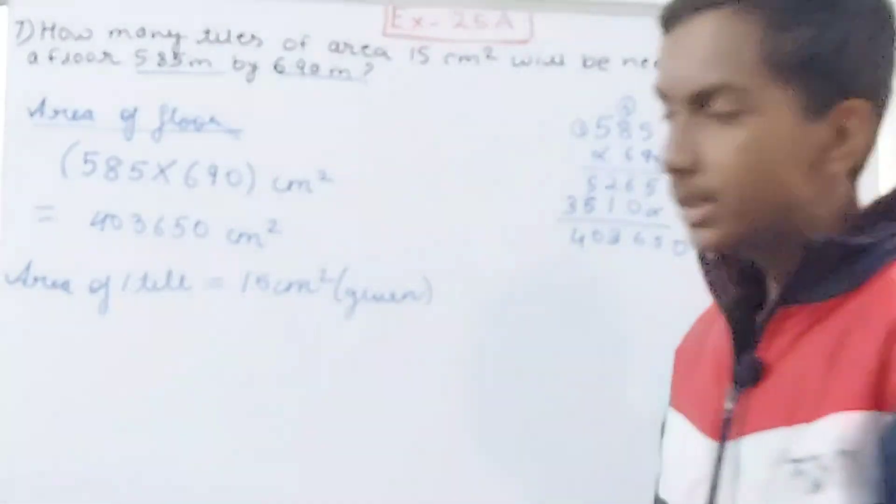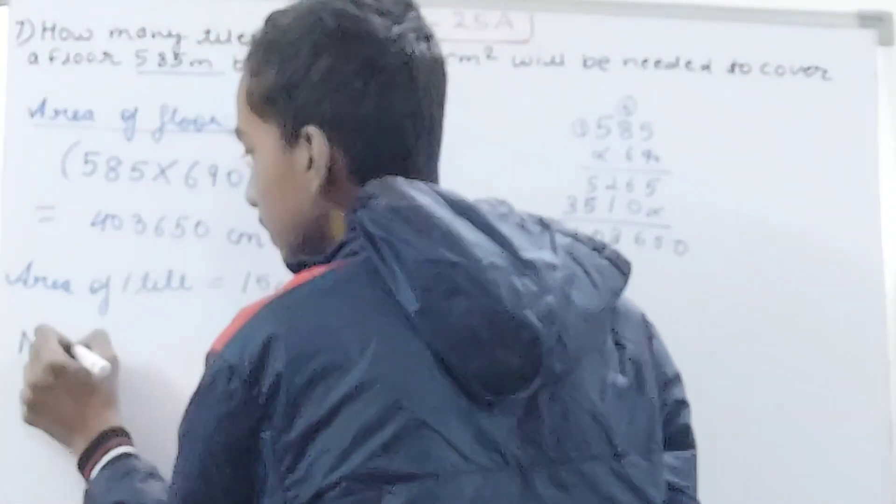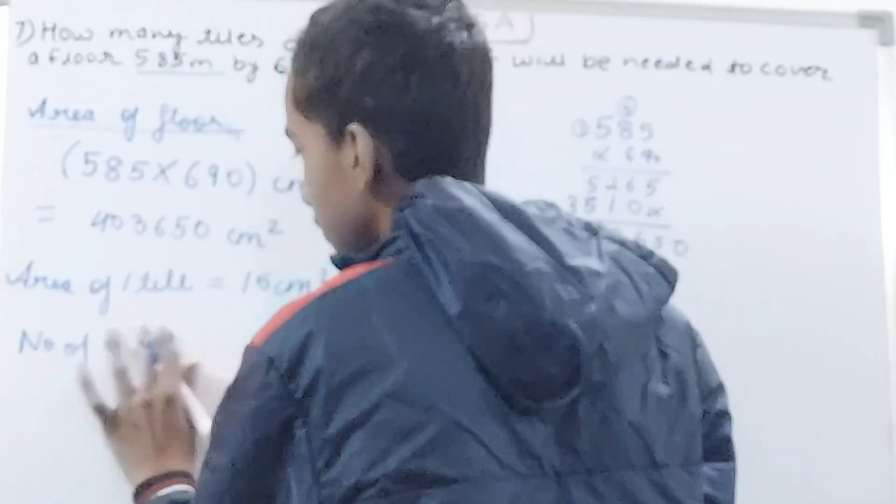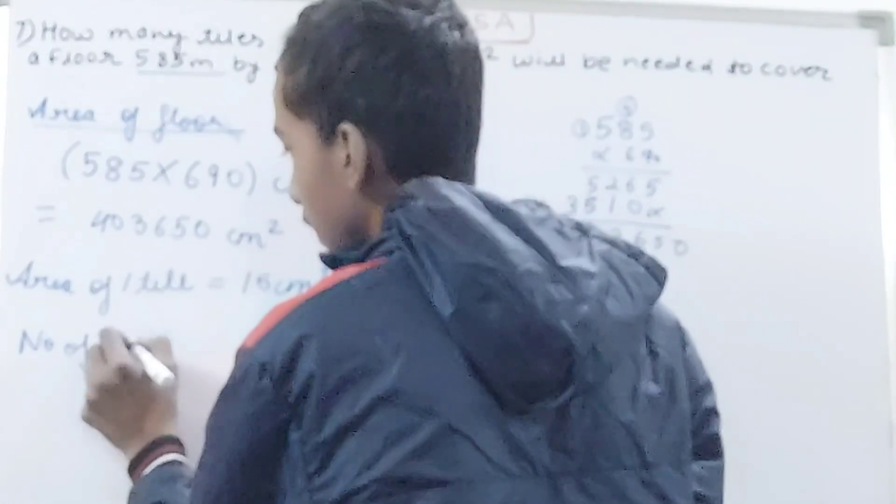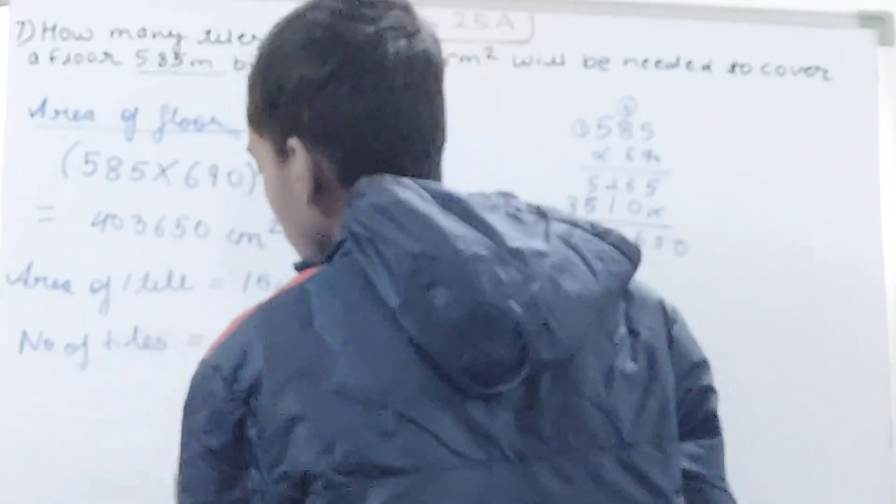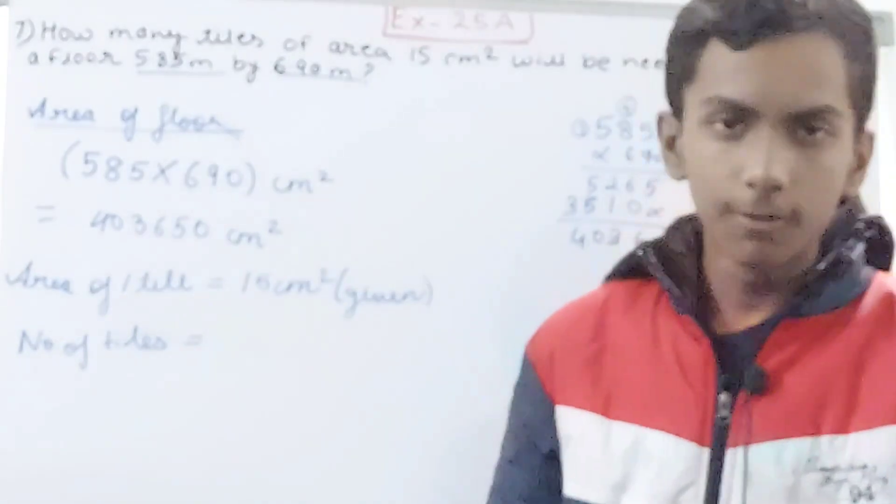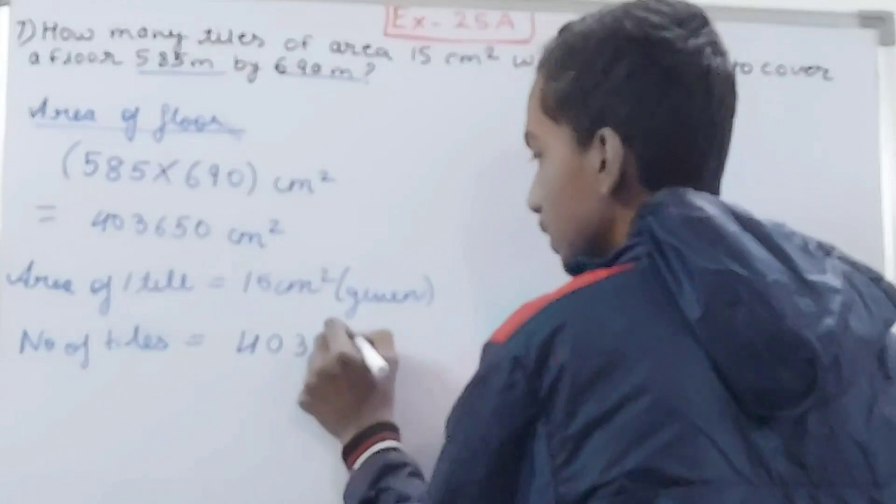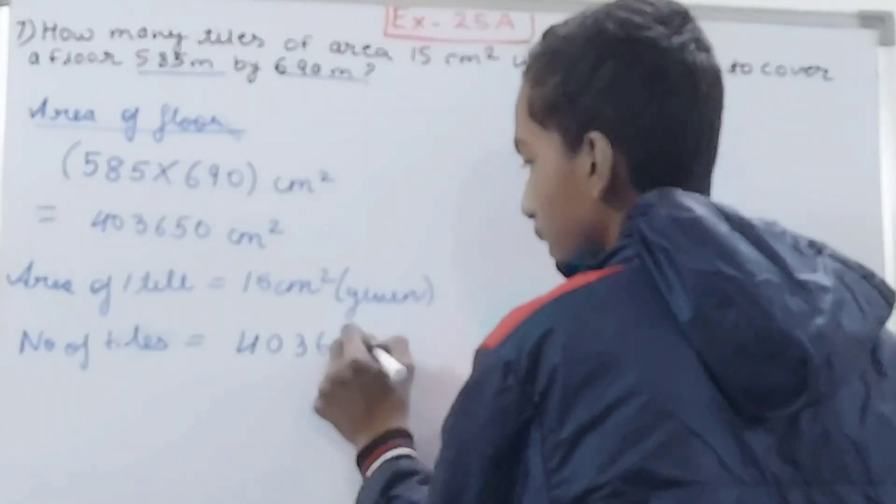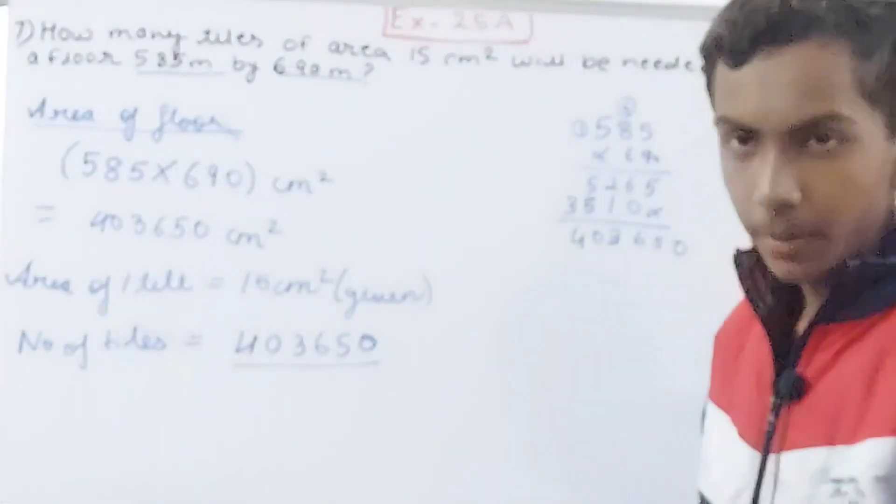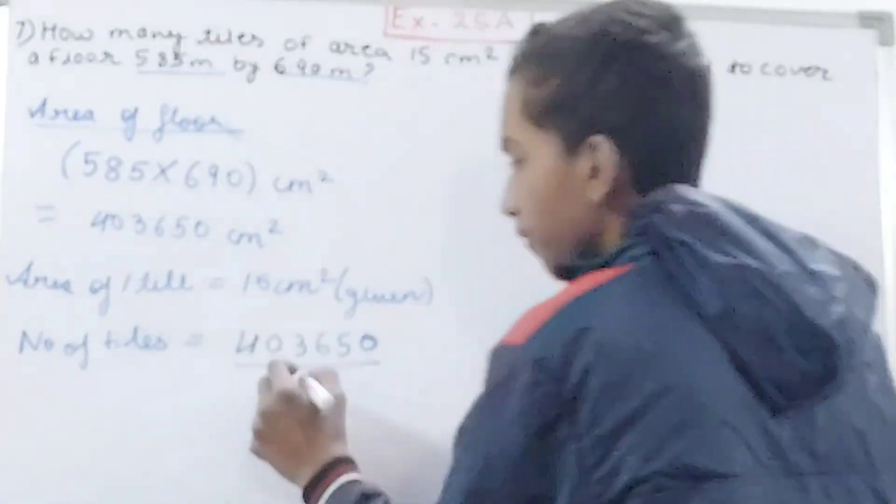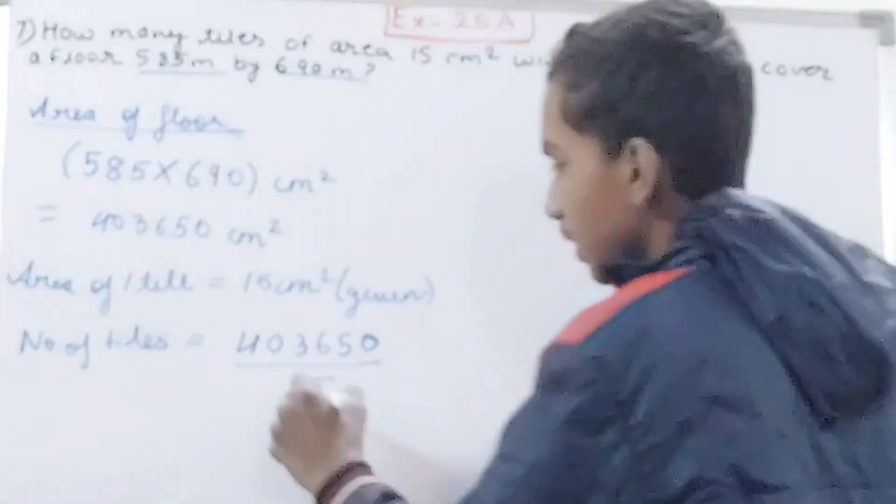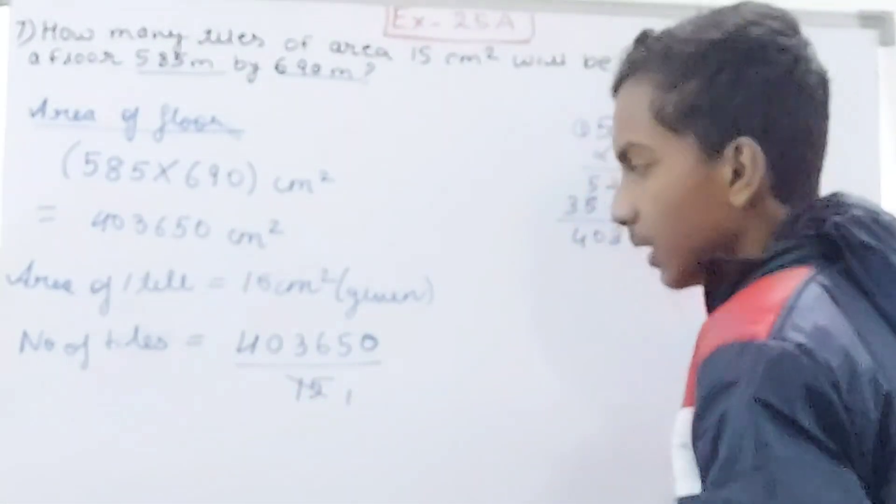And now number of tiles. So for calculating the number of tiles what we are supposed to do is: tiles - area of the floor upon area of one tile. So we have 403,650, that's the area of the floor, upon the area of one tile, that is 15 square centimeters. This will give us the number.